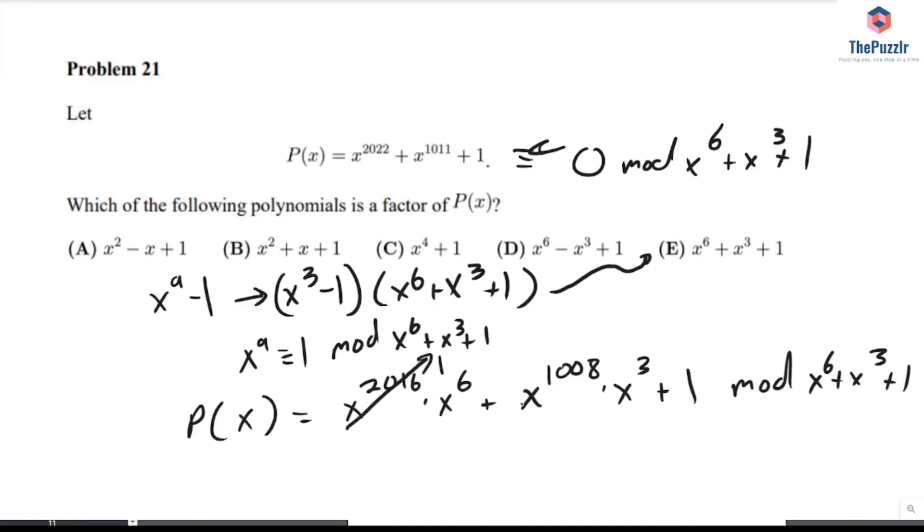This is just 1. So this is equivalent to x to the power of 6 plus x cubed plus 1, which is equivalent to 0 mod x to the power of 6 plus x cubed plus 1.